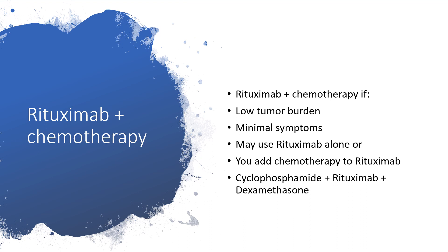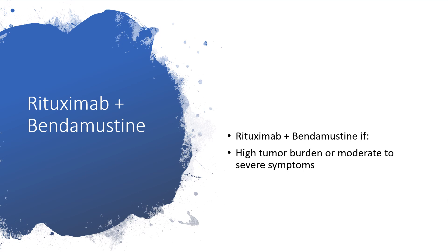We can administer rituximab with chemotherapy if we are dealing with low tumor burden or minimal symptoms. Remember, this is different from the emergency situation where we use plasmapheresis. We may use rituximab alone, or we may add chemotherapy. Cyclophosphamide could be added to rituximab with dexamethasone. We can also use rituximab if we are dealing with high tumor burden, with or without moderate to severe symptoms.